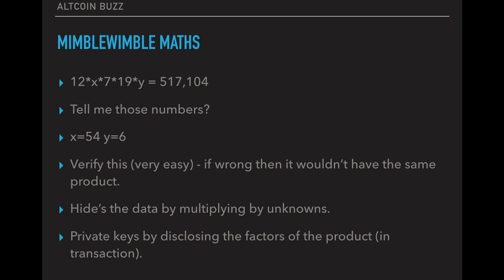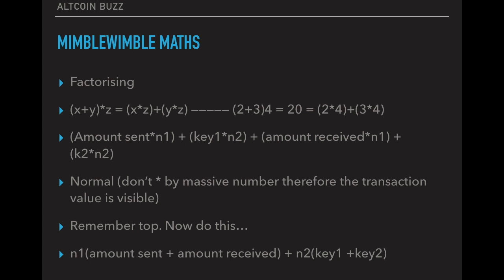So it acts as a private key by disclosing the factors of the product in the transaction. So in a transaction, it hides the data by multiplying by unknowns. So if you multiply by the unknowns and you get this random number at the end, if you look at the top bullet point, that's very different to just five Bitcoin in, five Bitcoin out. The private key comes by disclosing the factors of the product in the transaction. So those are disclosed between the sender and the receiver, and they act as a proof of having the Bitcoins in the wallet. So when you send that five Bitcoin to someone else, the private factors, these factors in the product of the transaction, they act as a proof of ownership for the receiver. So that X and Y, if you look at the top transaction would act as a proof of ownership there.